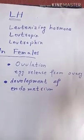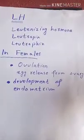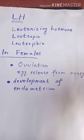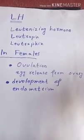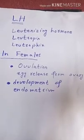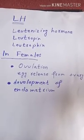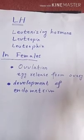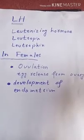So this is the very crucial role of luteinizing hormone, a hormone produced by the anterior lobe of the pituitary gland. Its role in females has been discussed here, and the role of luteinizing hormone in males will be discussed later. Allah Hafiz.